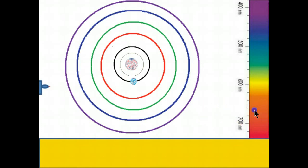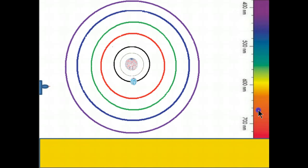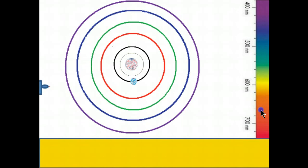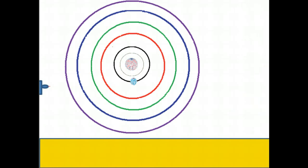Below 400 nm you get into the ultraviolet range, and above 700 nm you get into the infrared range. Ultraviolet and infrared light cannot be seen by the human eye. That spectrum was added to the simulation to give an idea of the wavelength of visible light; however, it has no effect on the simulation, so disregard the spectrum on the right-hand side.